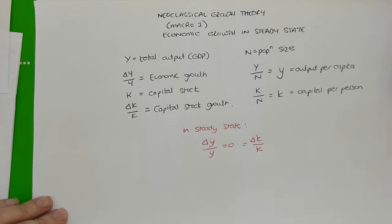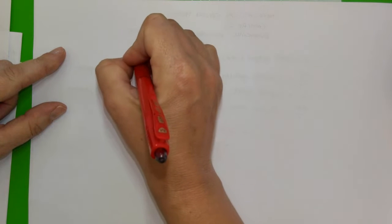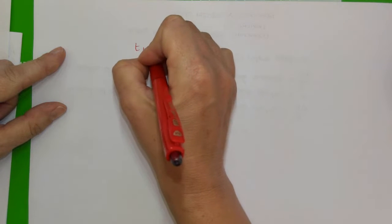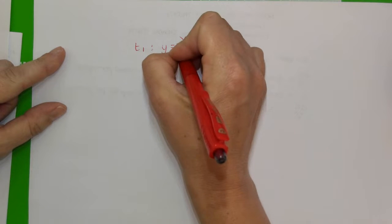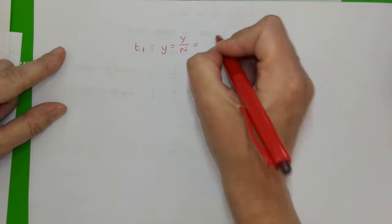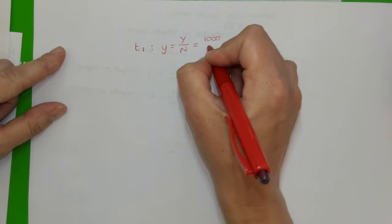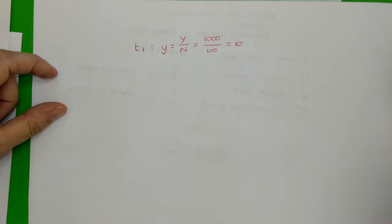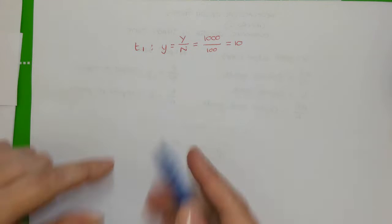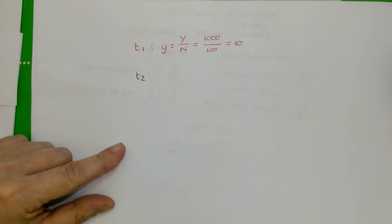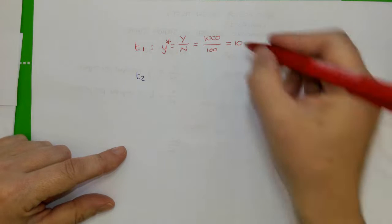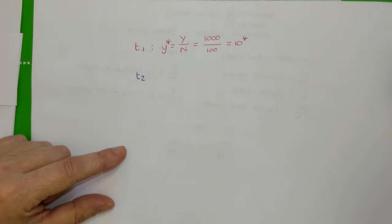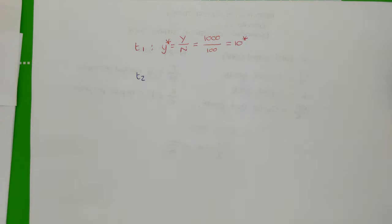What we now need to understand is that even though output per person and capital stock per person do not change in steady state, there is still output growth. So to do that, I am going to flip over this page. Let's say in time period one, we have our output per person, which is total GDP divided by the population size. Let's say that total output was 1,000, the population size was 100, and that gave us output per person equal to 10. This value of 10 would be a steady state amount of output per person.